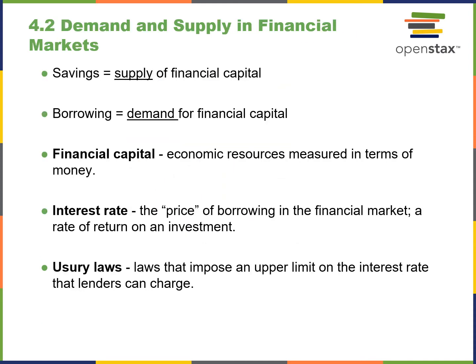Demand and supply can also be applied to financial markets. Savings would be considered financial capital, and borrowing would be demand for financial capital. Financial capital is basically economic resources measured in money. The interest rate is essentially the price of borrowing. For the people doing the lending, it's a rate of return on that investment. A usury law imposes an upper limit on the interest rates that lenders can charge — there are a lot of consumer protection concerns around predatory lending. Many credit cards work right beneath the usury law, with rates of 25% or 35% interest.